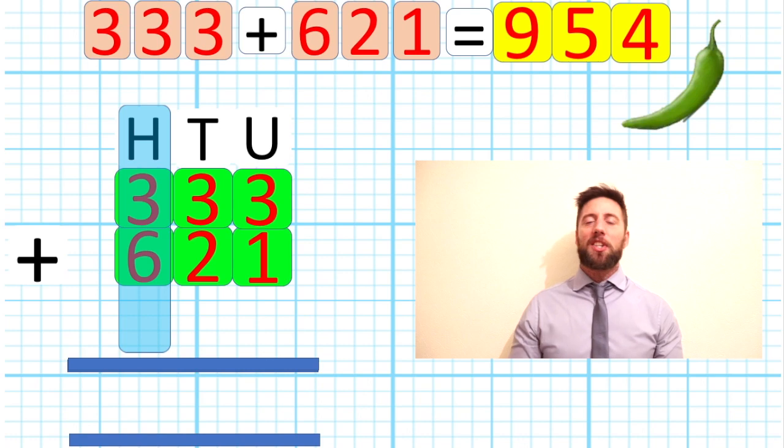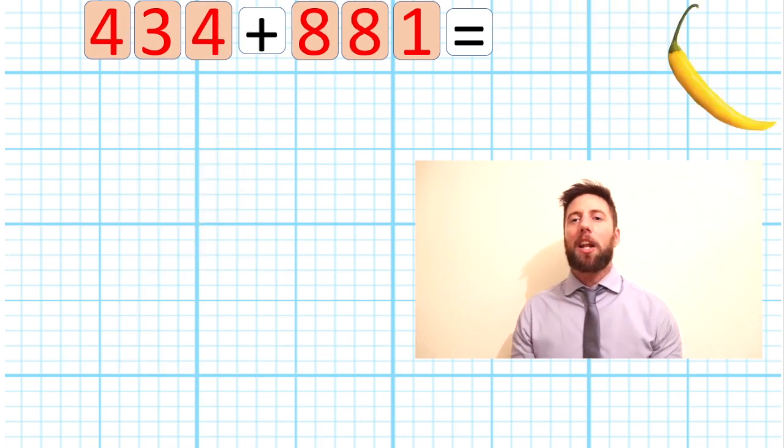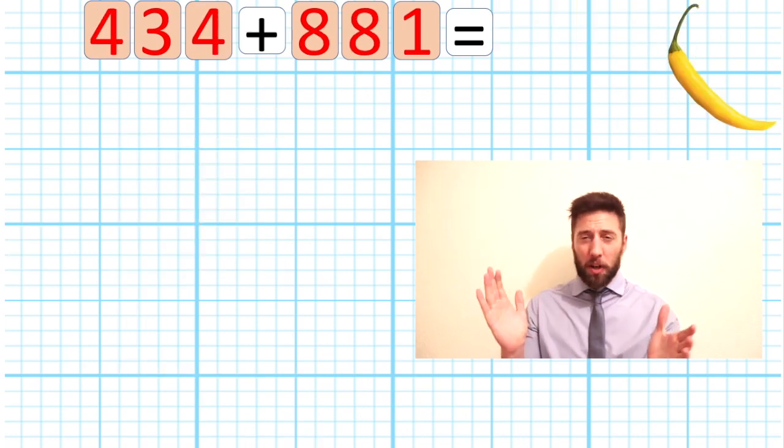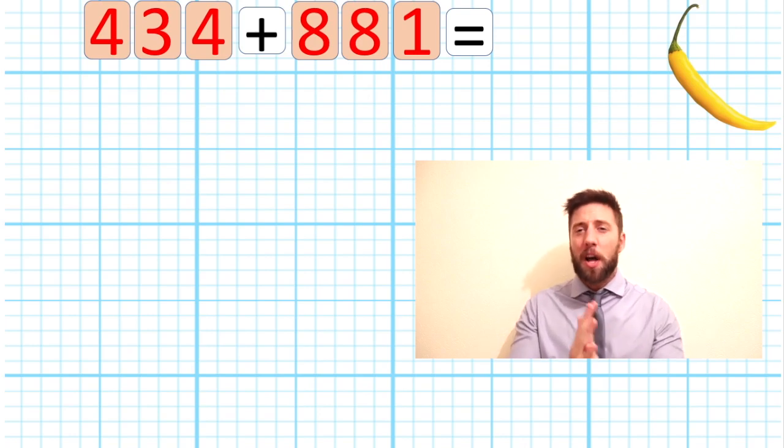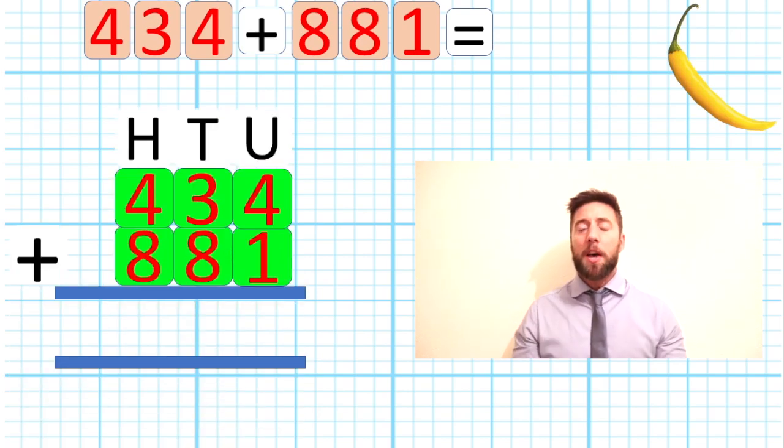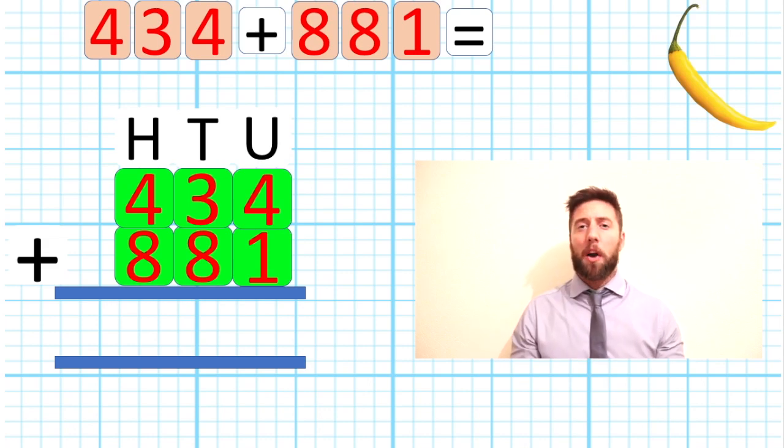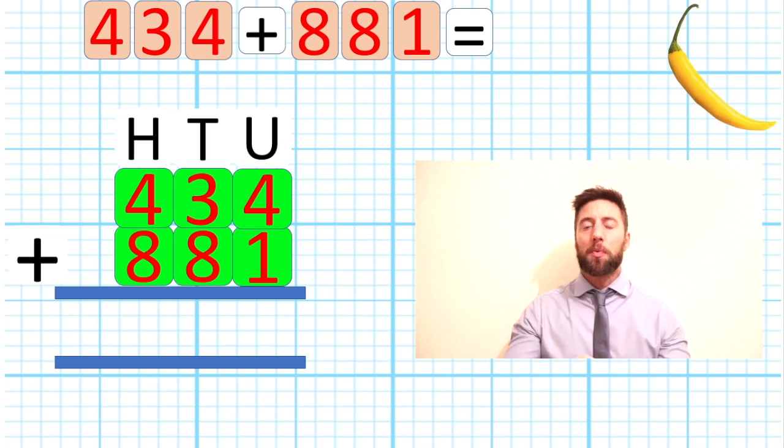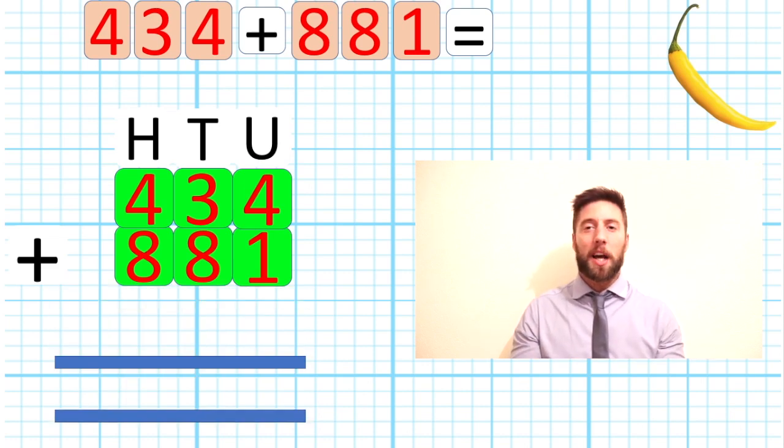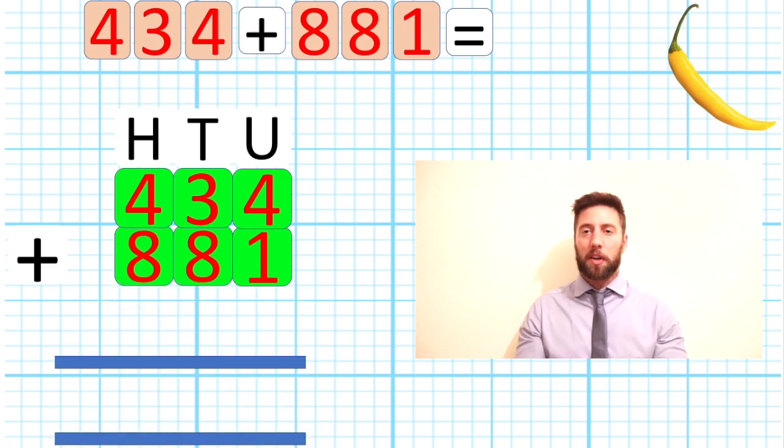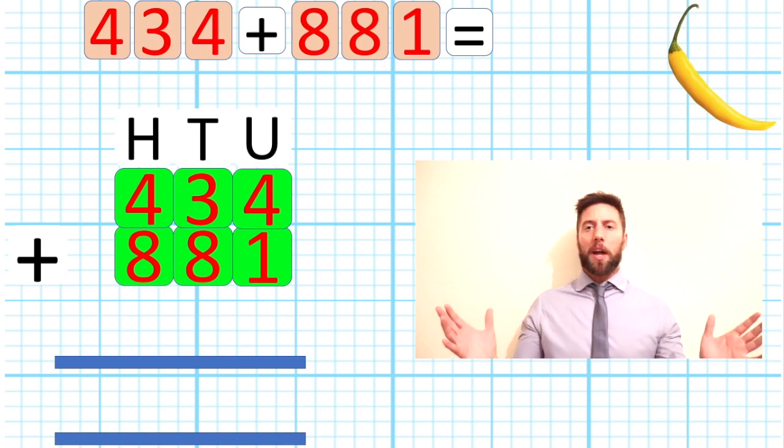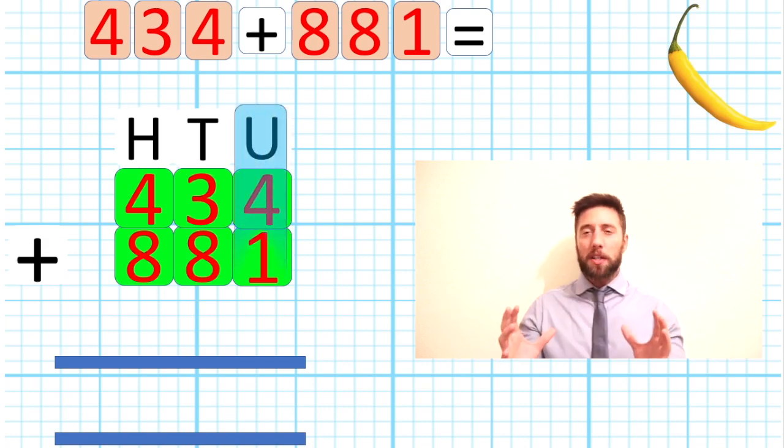Let's have a look now at a yellow chili challenge. Let's see how this can get a little bit harder. Let's have a look at the number 434 add 881. Same thing - we're going to lay out our columns exactly as we should. Put all our things in place: our units, tens, and hundreds, our addition sign, and our equals bar. Remember, let's drop that bar down so it gives us that spare row.